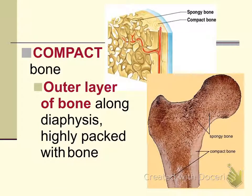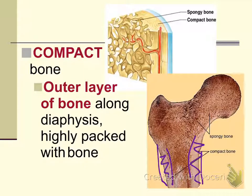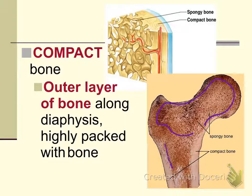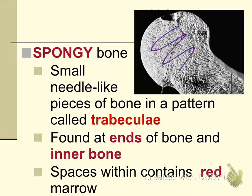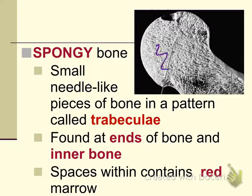Two types of bone make up the long bone. Compact bone makes up the outer portion of long bones, giving it strength — it is highly packed with bone tissue. The other type is spongy bone, found at the ends of the bones and in portions of the inside. Unlike compact bone, which has little internal space, spongy bone is made up of a needle-like pattern of bone called trabeculae, with spaces within the bone.